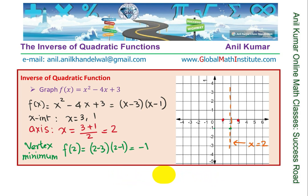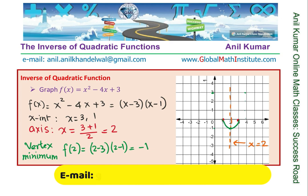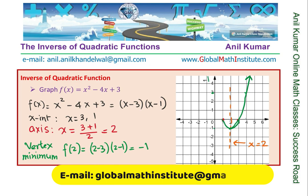We can now continue sketching the graph from here. These three are indeed the critical points. Using the step-function symmetry: from 1, then 2, then 3 should be the next symmetric point. So let me continue and sketch the parabola as shown. So that is the function f(x), which we have sketched using the factored form.